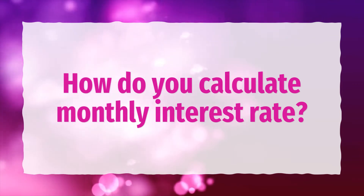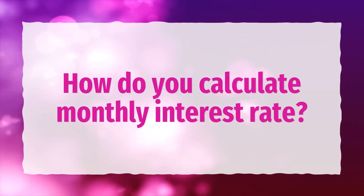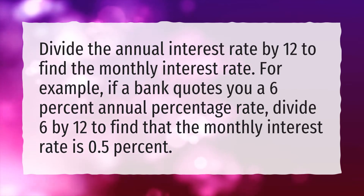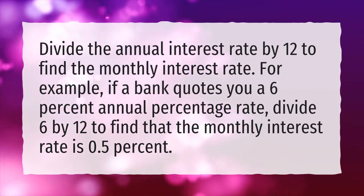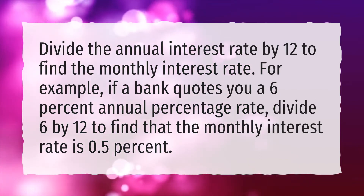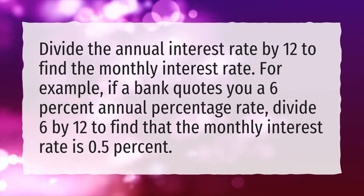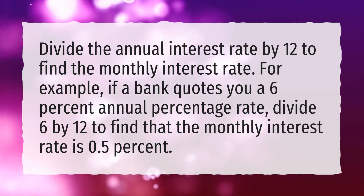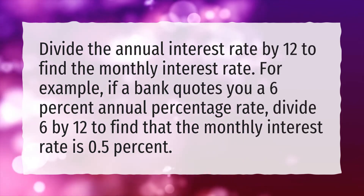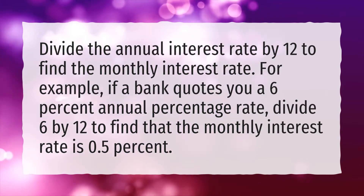How do you calculate monthly interest rate? Divide the annual interest rate by 12 to find the monthly interest rate. For example, if a bank quotes you a 6% annual percentage rate, divide 6 by 12 to find that the monthly interest rate is 0.5%.